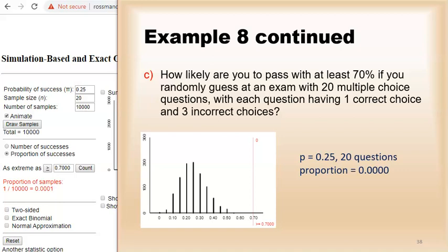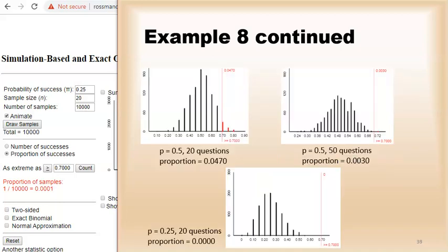And in my previous simulation I got nothing. So with 20 questions true-false it was about 5 percent. 50 questions that dropped to about 0.3 percent. For multiple choice 20 questions, no chance of passing, there were very, very little chance of passing.